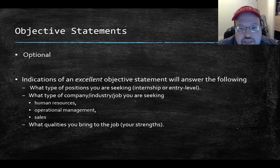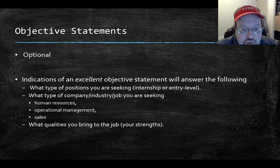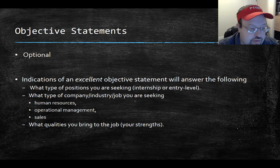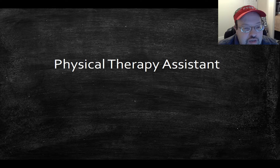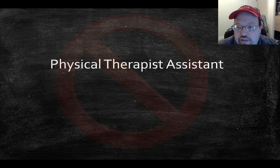For objective statements — they're optional, but they should indicate an excellent statement answering: what type of position are you seeking, internship or entry level? What type of company or industry? Are you looking at outpatient physical therapy, inpatient, or rehab? Is there a specific focus like orthopedic sports or neuro? And what qualities do you bring — your strengths? One important note: don't write 'physical therapy assistant.' It's actually 'physical therapist assistant.' Make sure you have that distinction.